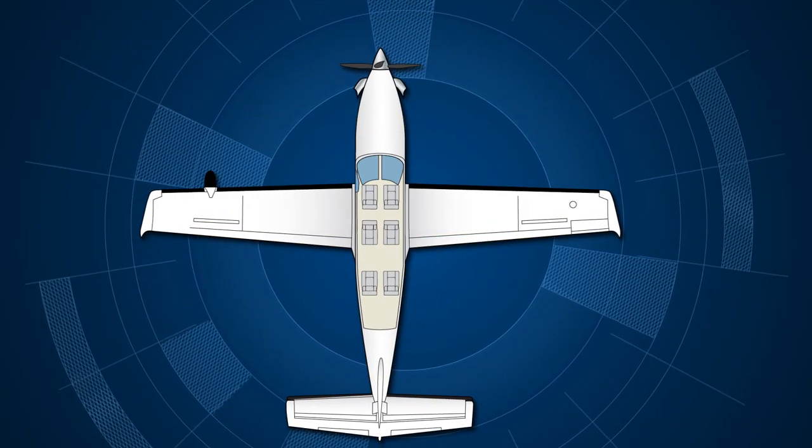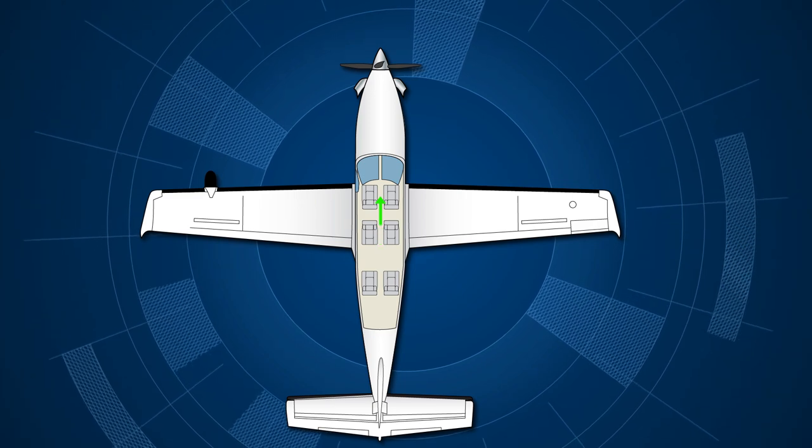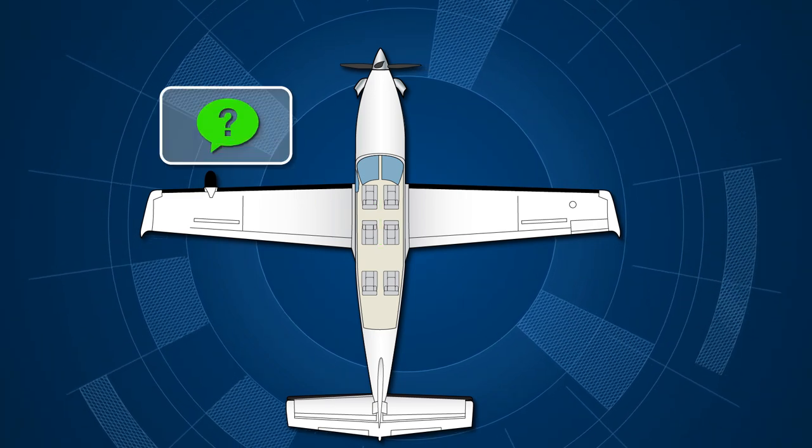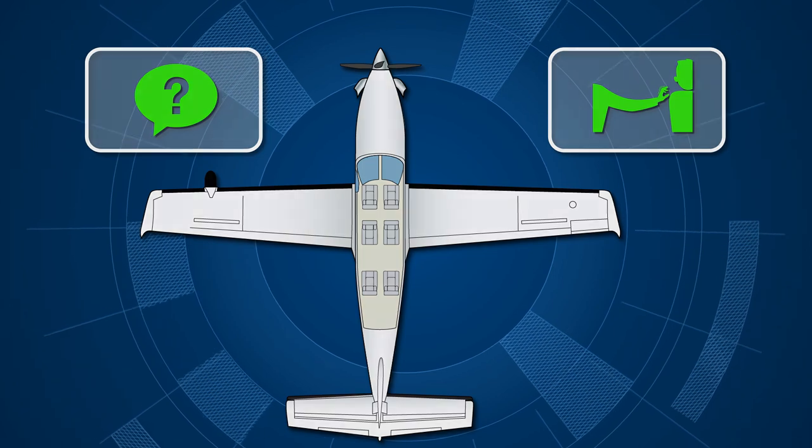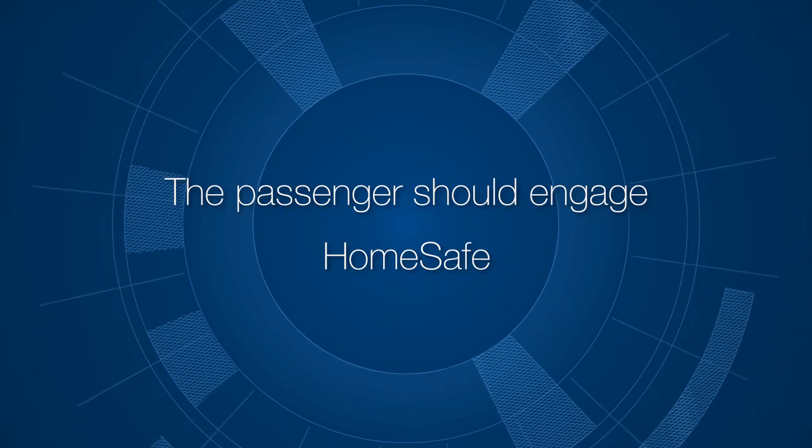Before pressing the HomeSafe button, the first step is to enter the cockpit and check the pilot's condition by asking questions or by gently shaking the pilot's shoulder. If the pilot does not react, the passenger should engage HomeSafe.